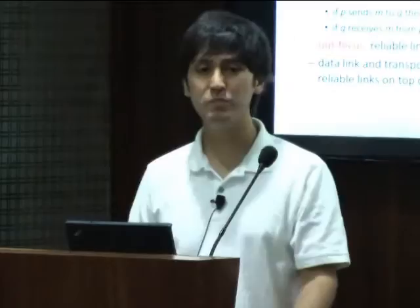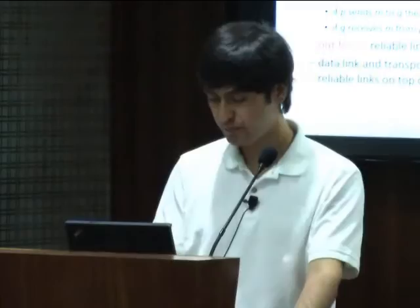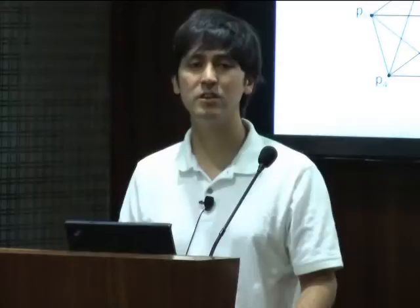Our focus is on reliable links satisfying these two properties. We can make this assumption because well-developed data link protocols take non-reliable links — which can have message loss, duplication, or spurious messages — and implement the abstraction of a reliable link. For example, a TCP connection between two processes handles retransmitting lost messages and uses checksums to ensure corrupted messages are discarded. This slide summarizes our setting: five processes P1 through P5 connected in a fully connected communication network with reliable links, shown with a message flowing from P2 to P1.